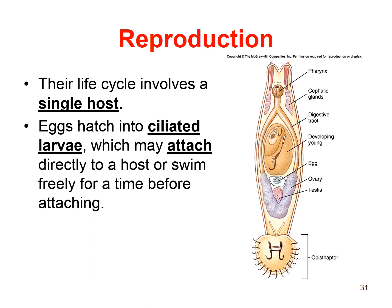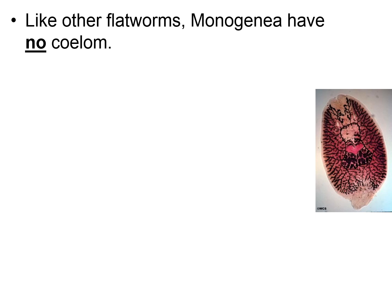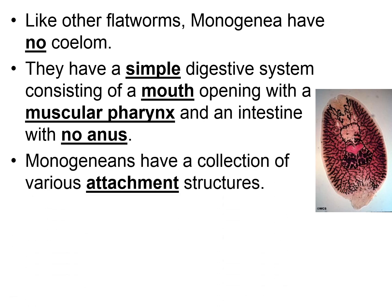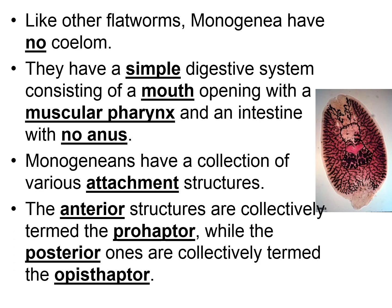Their life cycle involves a host, because they are parasites. The eggs hatch into ciliated larvae which may attach directly to a host or swim freely until they find one. The adults lack cilia. Like other flatworms, monogeneans have no coelom. They have a simple digestive system with a mouth opening and muscular pharynx but no anus. They have various attachment structures: the anterior ones are collectively called the prohaptor and the posterior ones the opisthaptor.